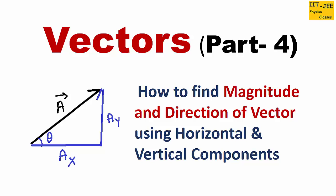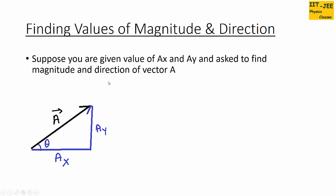So if you are given values of ax and ay — ax is the horizontal component of the vector and ay is the vertical component — and you are asked to find the magnitude and direction of that vector. Suppose we have this vector a and its direction is this angle theta. We have to find the magnitude and direction of vector a.